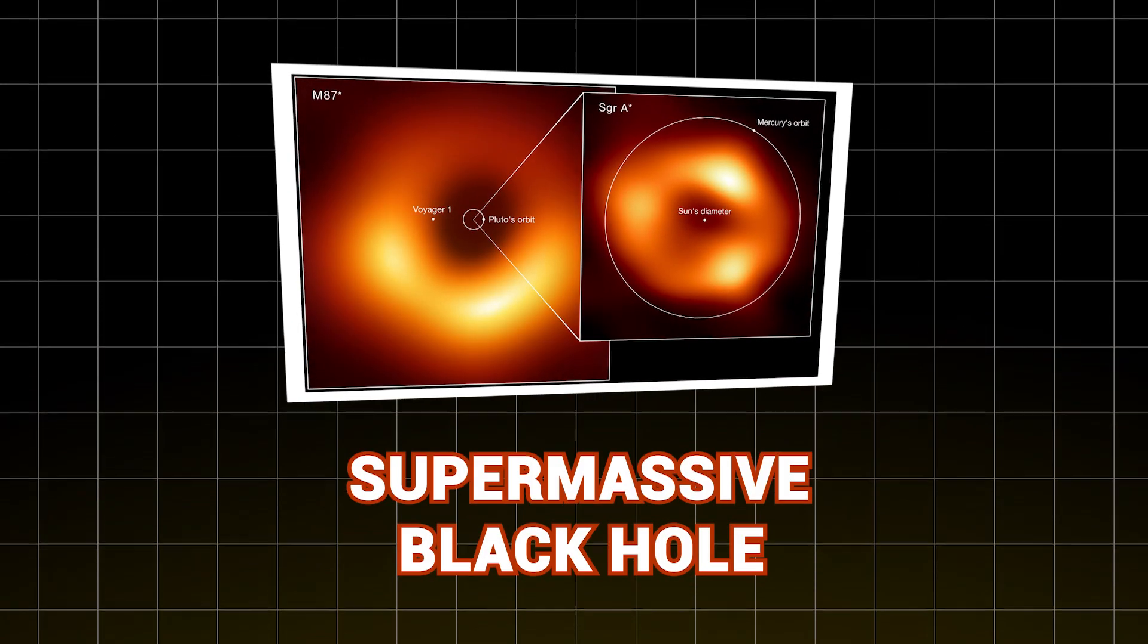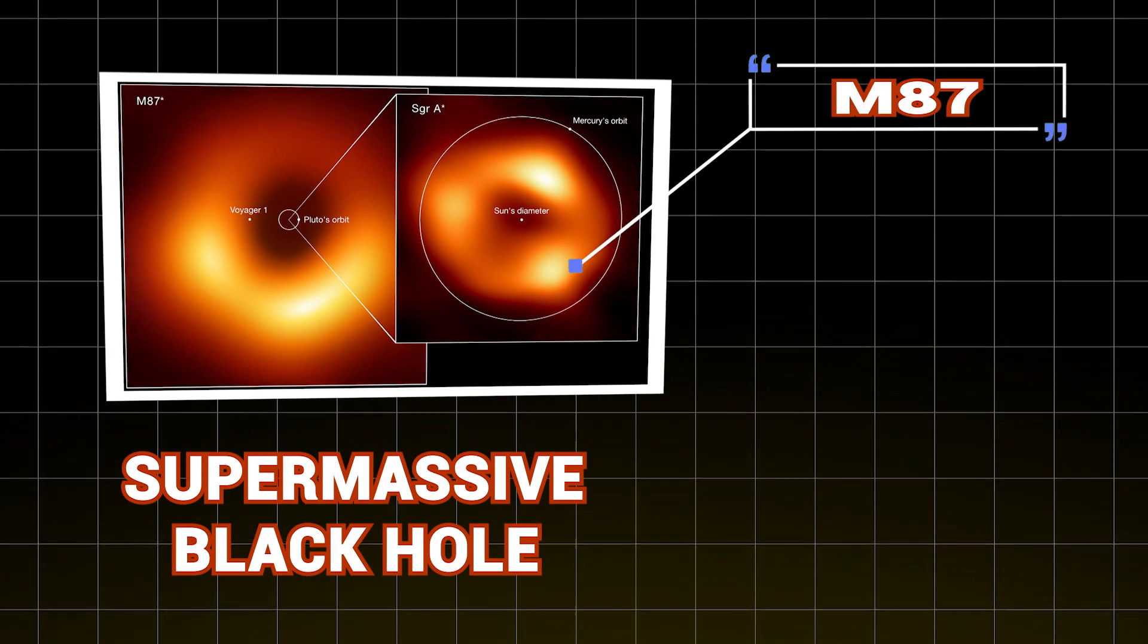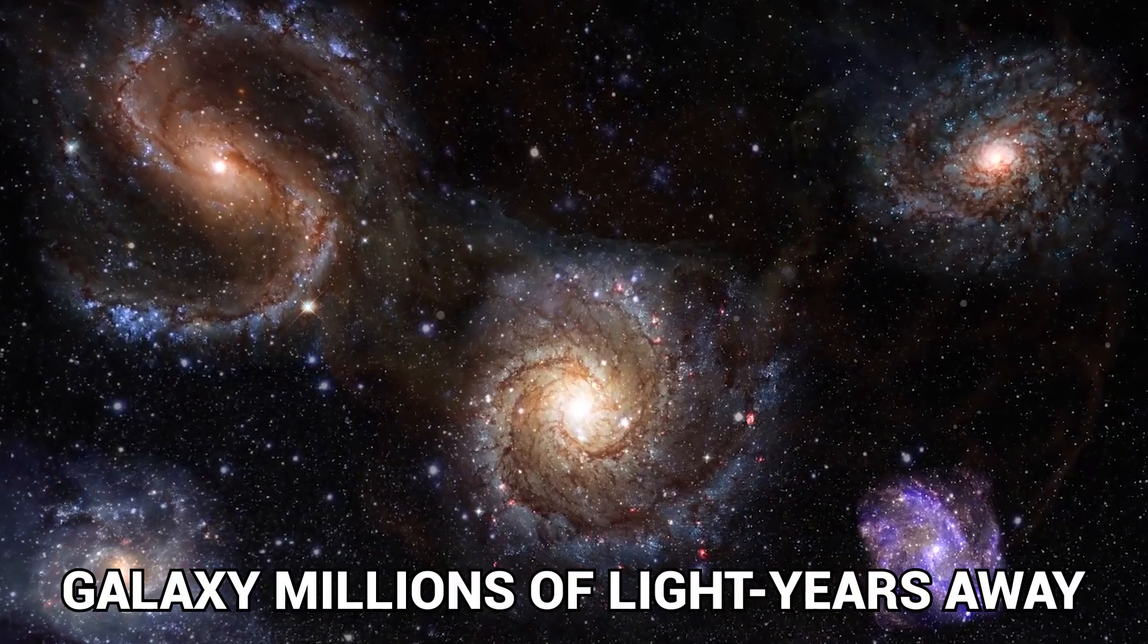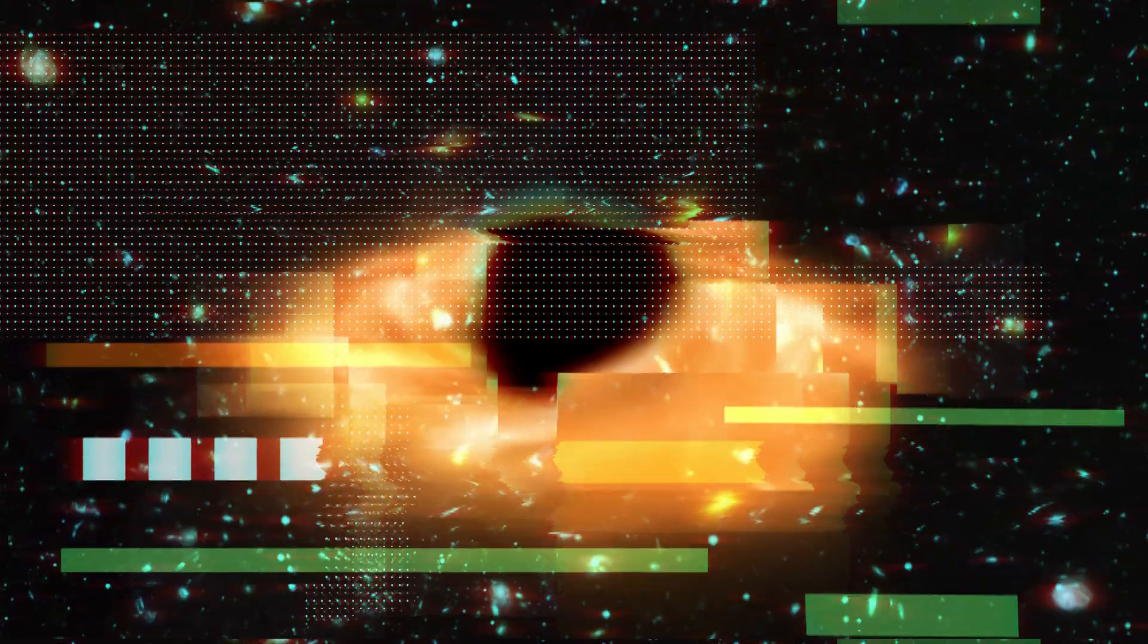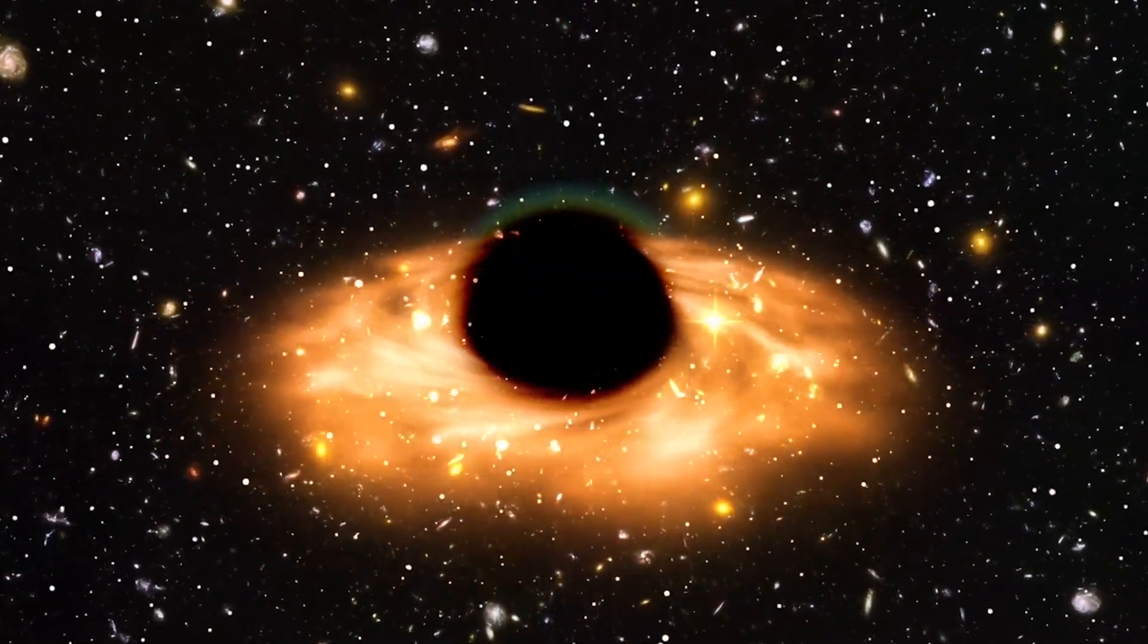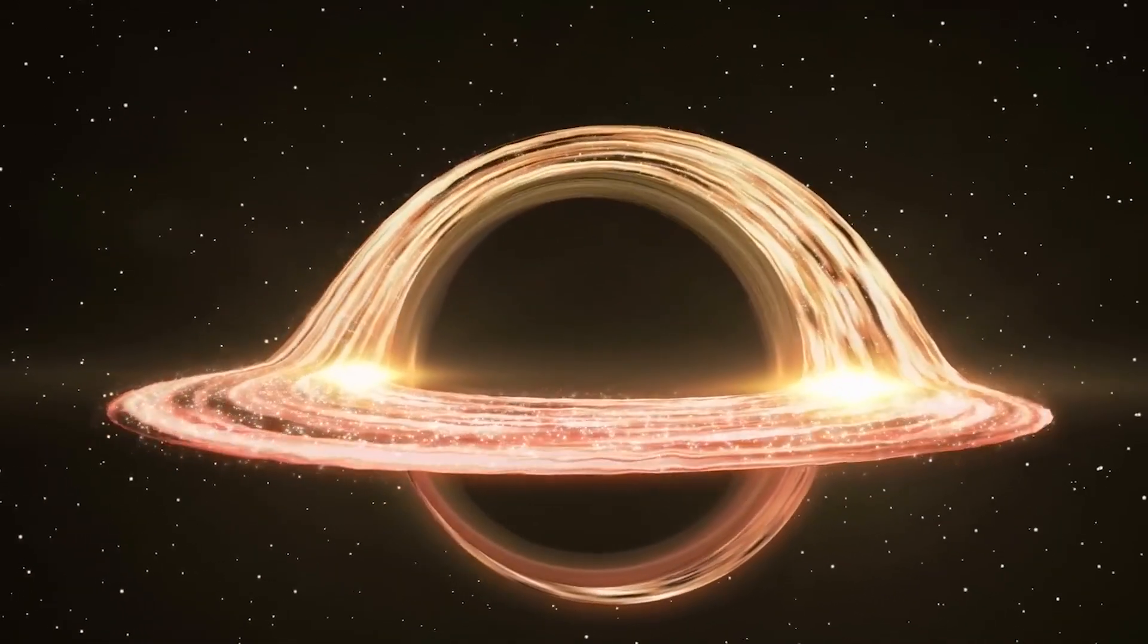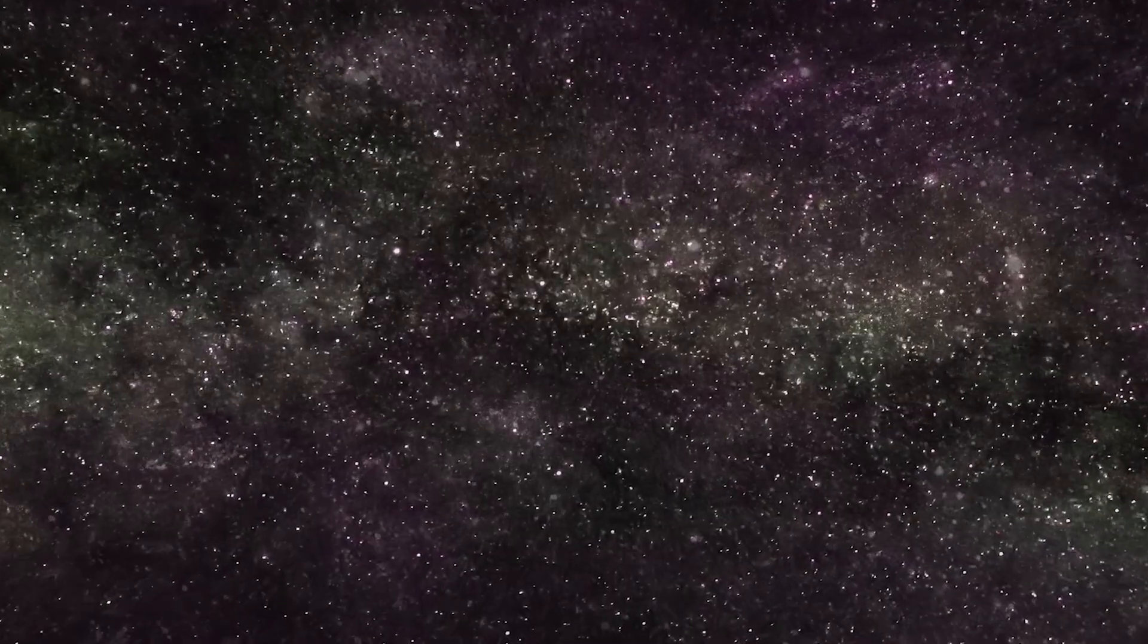This historic picture of the supermassive black hole at the heart of M87, a galaxy millions of light years away, shows the Event Horizon's shadow against the glowing gas, moving around it very close to the speed of light. This was more than just a big step forward for science. It was a leap into a future where things that can't be seen, will be seen.